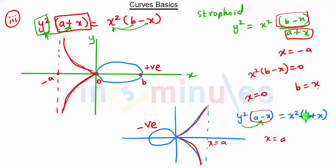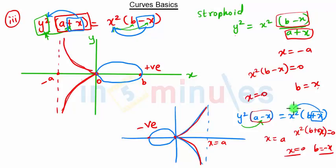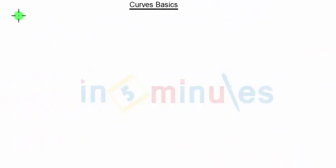When we put this term equal to 0 we get x equal to a, so this is our asymptote, and the curve starts from here. Putting y equal to 0 gives x² equal to b plus x equal to 0, so x is 0 or x is minus b. Whenever we have a minus x term with x² and plus x term with y², the loop is on the positive side. Whenever we have plus x with x² and minus x with y², the loop is on the negative side.